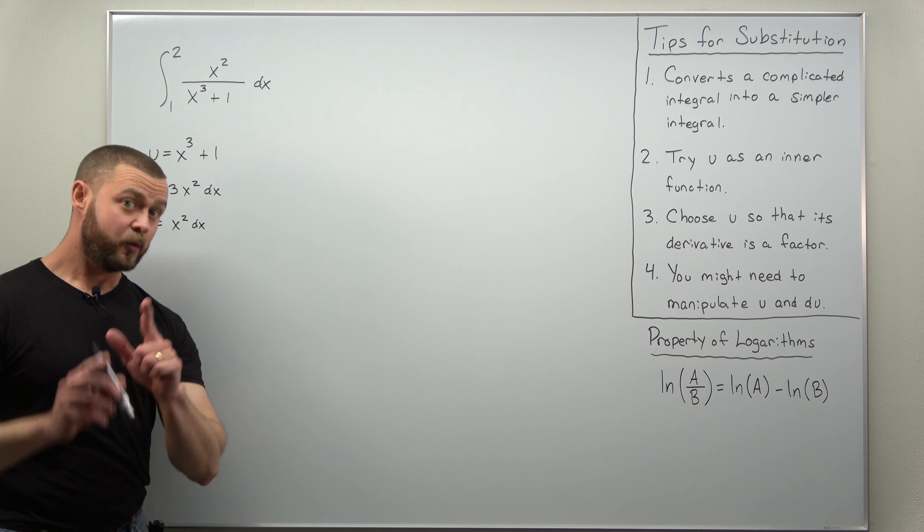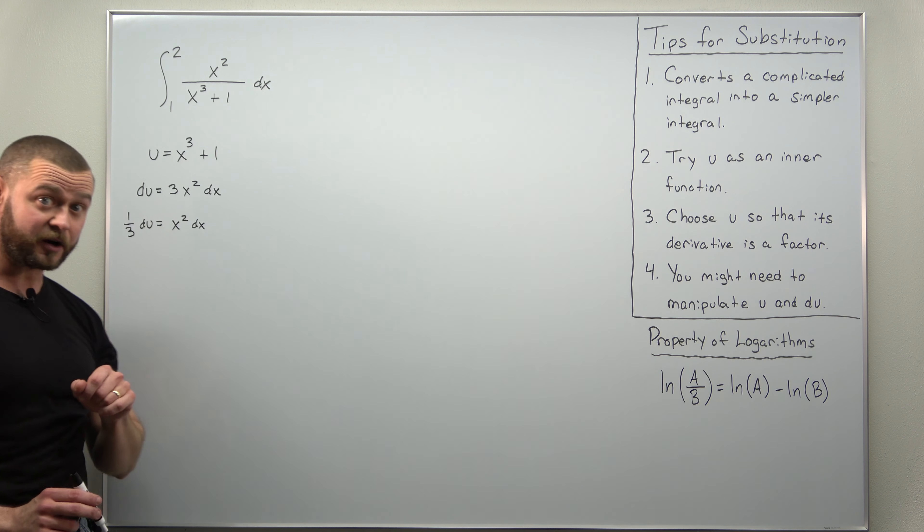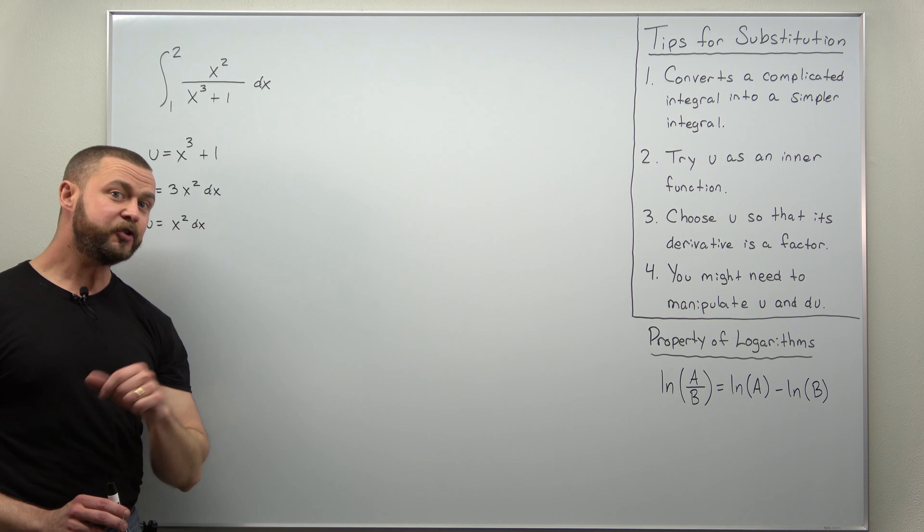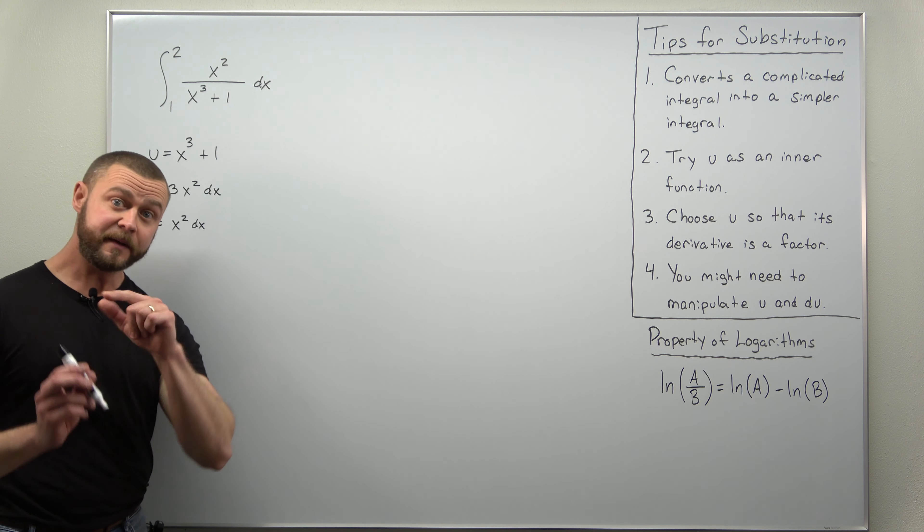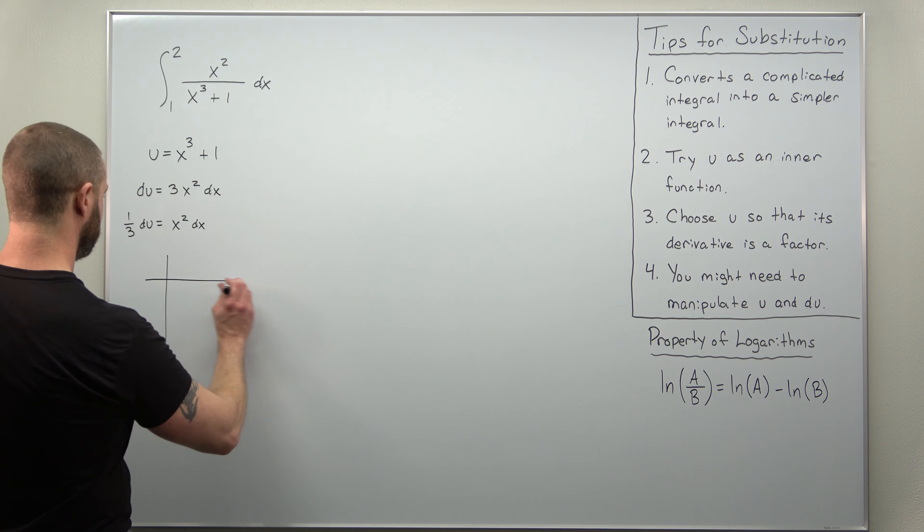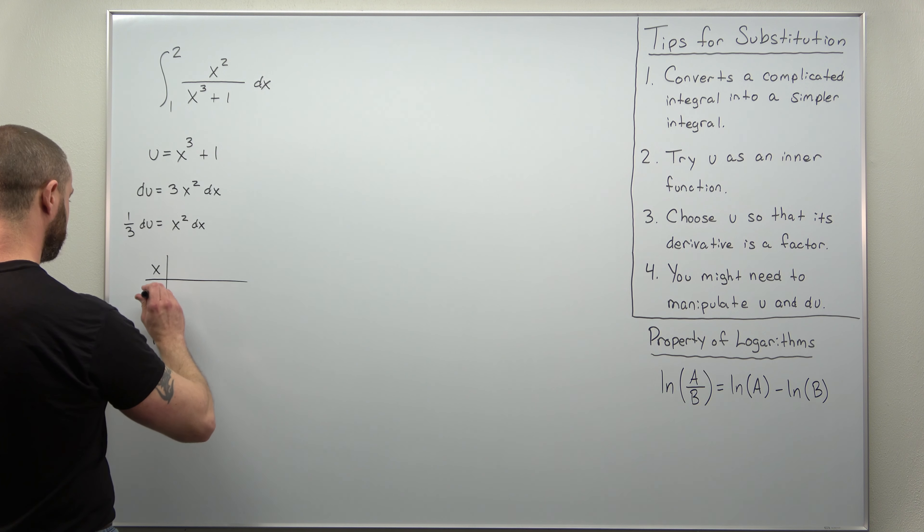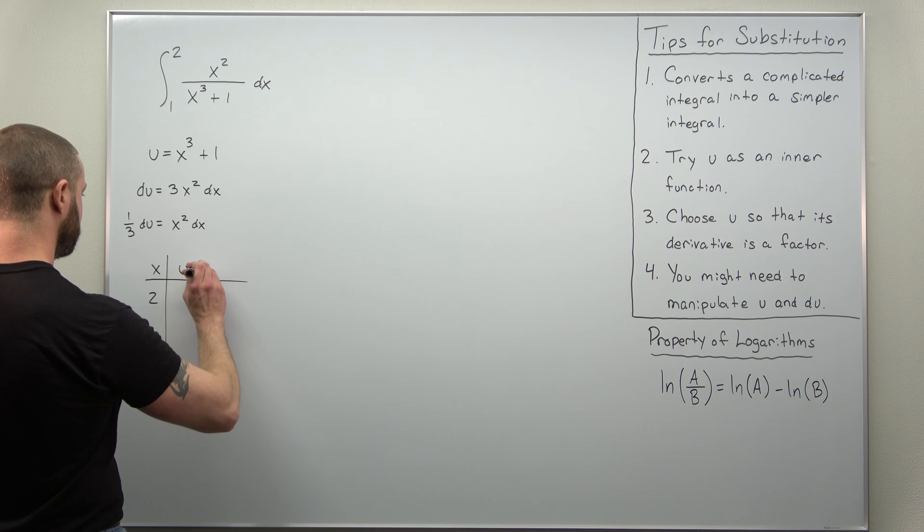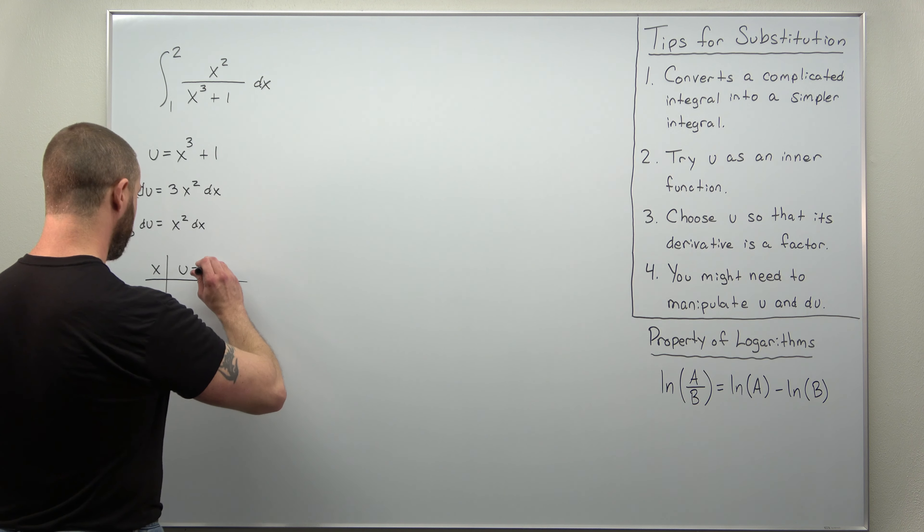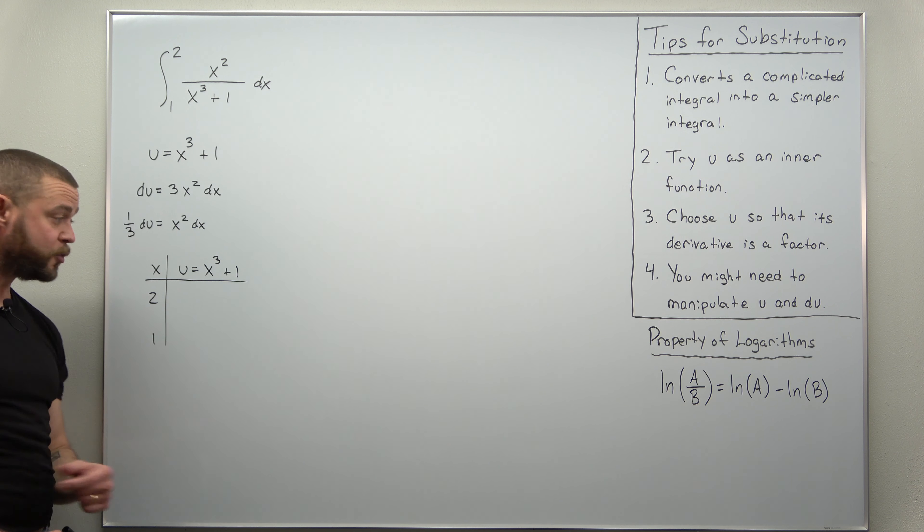The last part which I always advocate: when you're doing a substitution with a definite integral, an integral that has a lower and upper limit, use your substitution to change or convert from x limits to u limits. And we're just going to make a simple conversion chart. Originally here our x limits are 1 and 2 and we just use our substitution u as x cubed plus